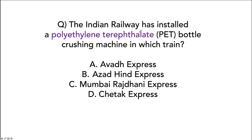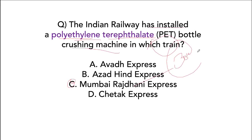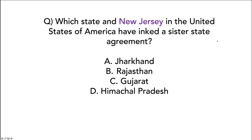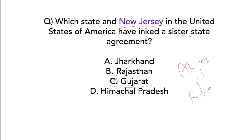Indian Railways has installed a polyethylene terephthalate bottle crushing machine in the Mumbai Rajdhani Express — the first plastic bottle crushing machine in India, capable of crushing 3000 bottles per day. Gujarat and New Jersey have signed a sister state agreement. Recently, Ahmedabad also signed a sister city agreement with Kobe in Japan.